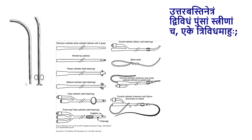The catheters used in those days were metal catheters — rigid catheters — and hence they had to be of a different nature for the male and female, following the shape of the urethra. The male catheter would be somewhat curved, and the female catheter is somewhat straight and shorter.